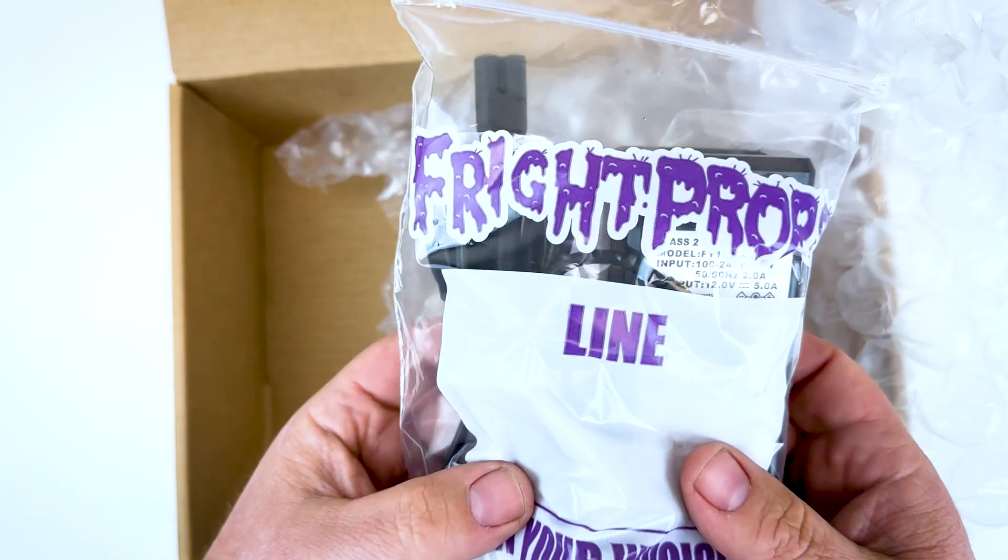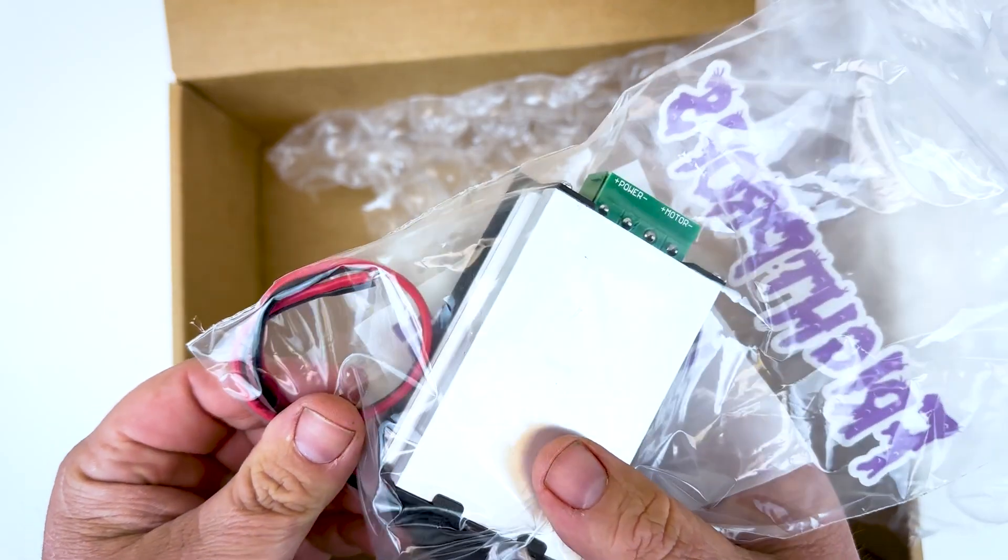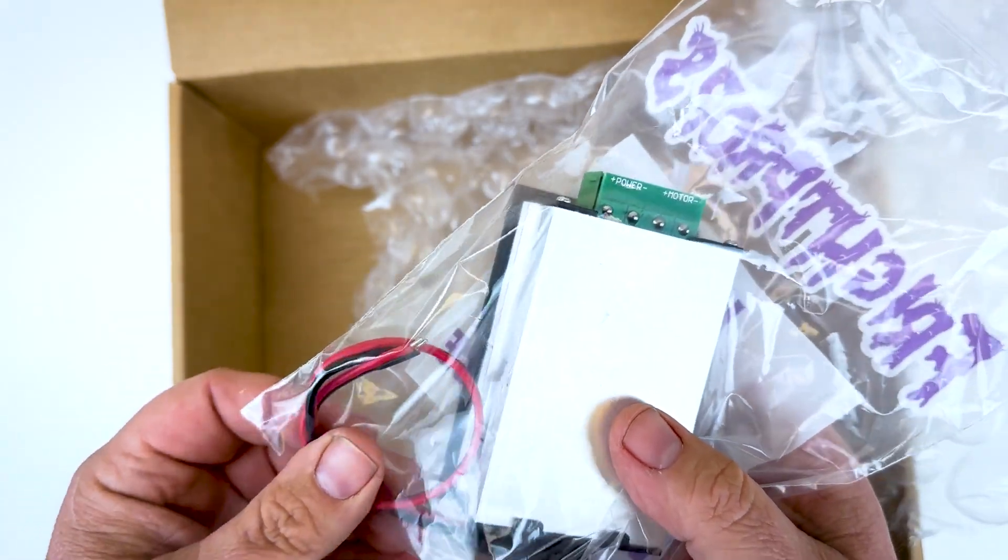The power supply is here. This is a 12 volt 5 amp power supply. And here is the speed controller along with a female wire adapter so that you can attach the power supply to the speed controller.